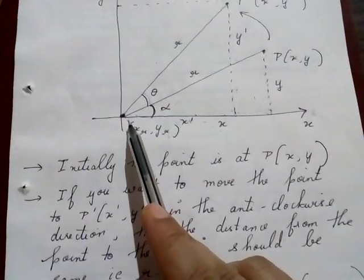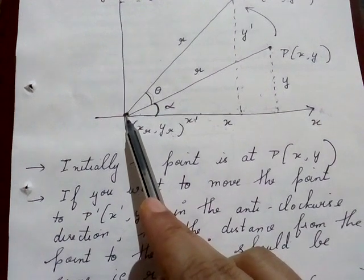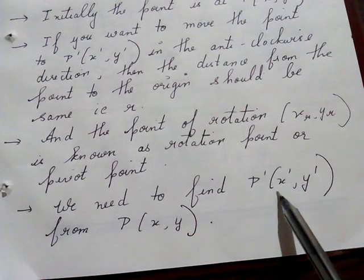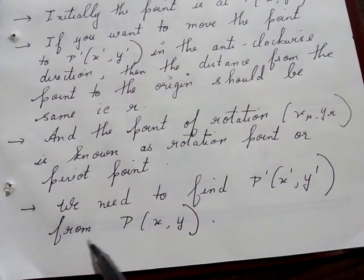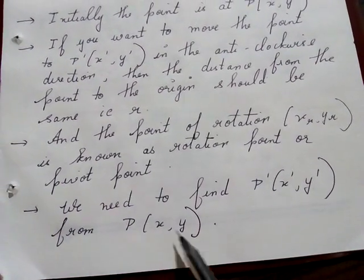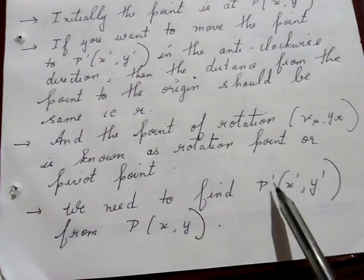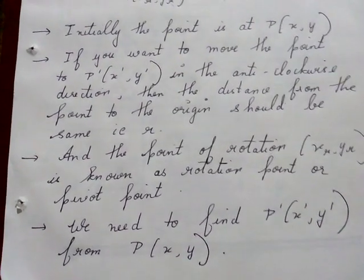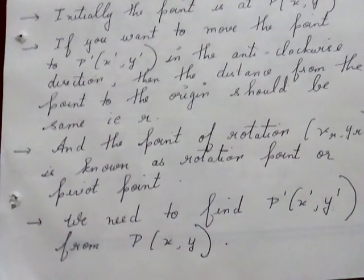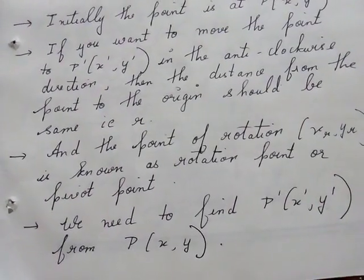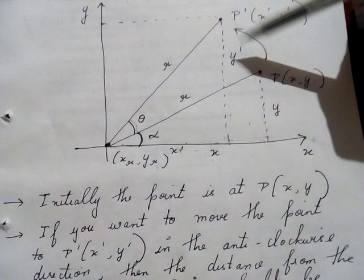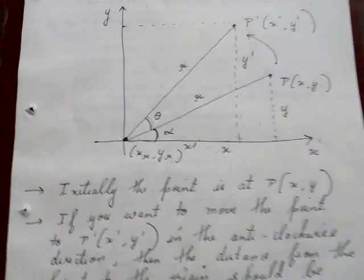We need to find P'(x', y') from P(x, y). That is, P(x, y) will be given and you have to find out P'(x', y'). We will see how to find P'(x', y') from P(x, y) using these two triangles.